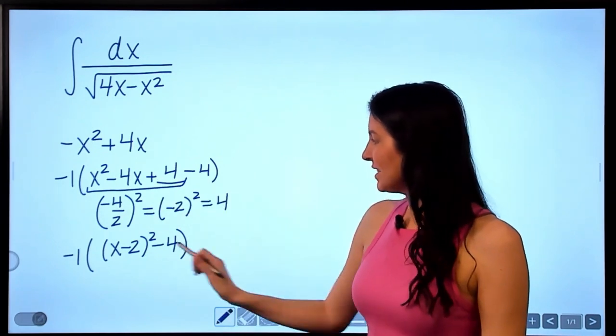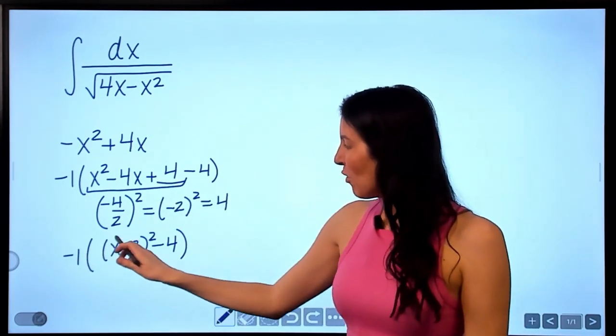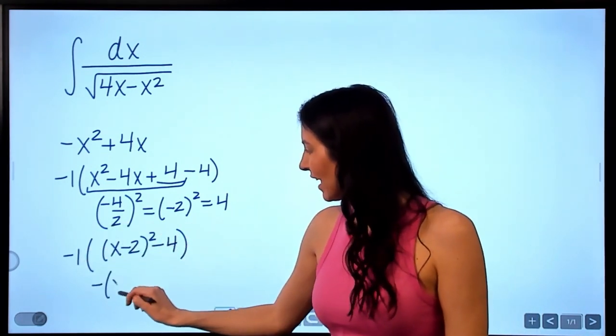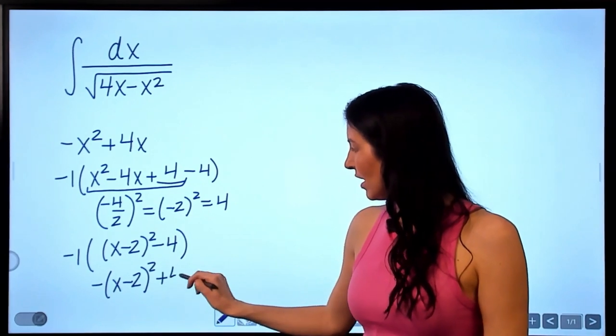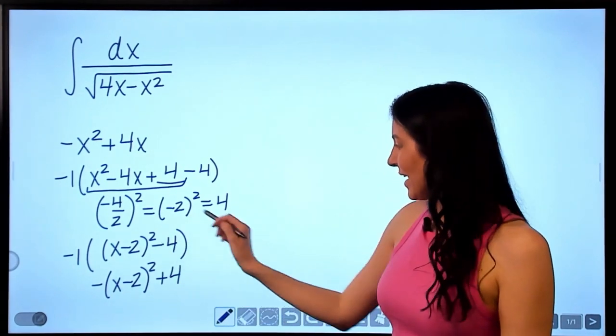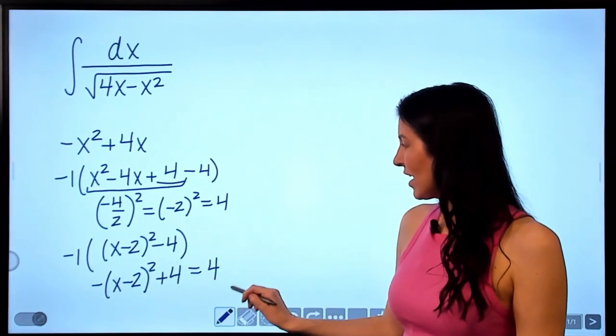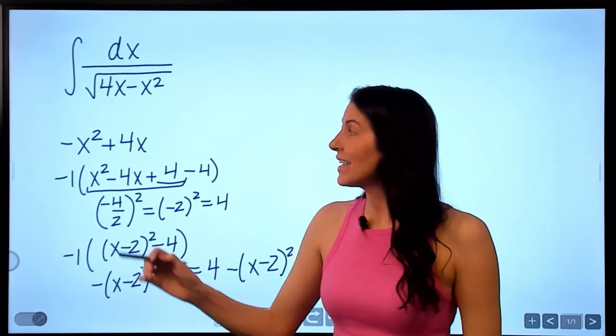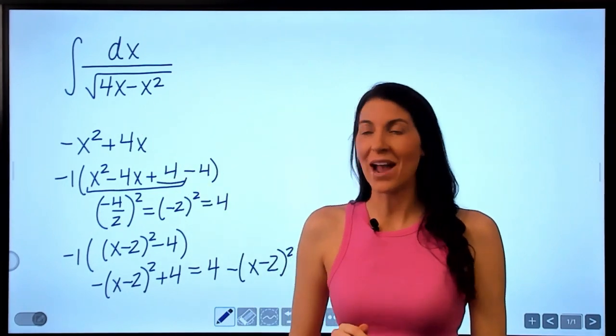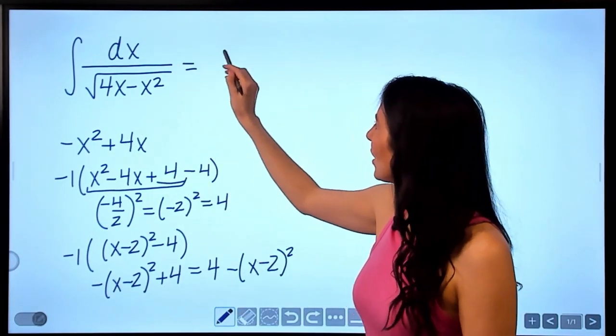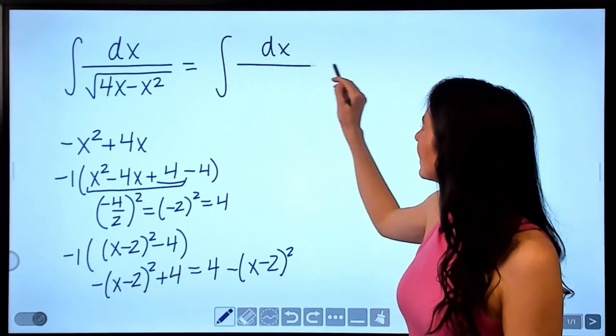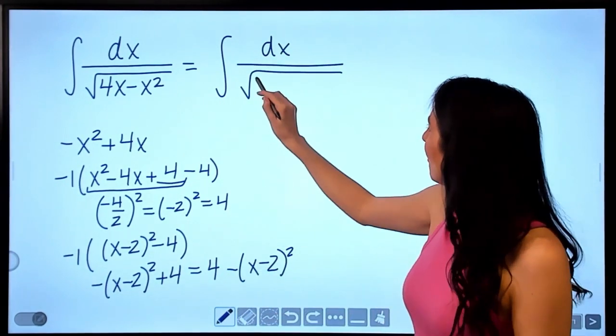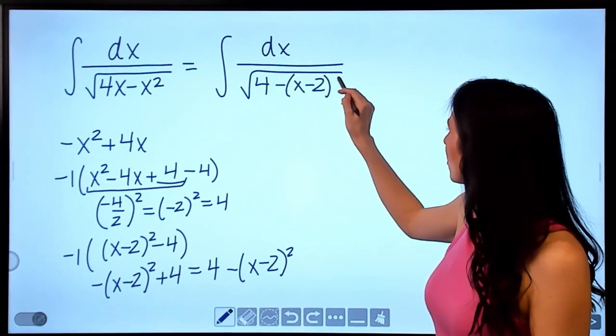And then I have this minus 4 right there. So now if I go back in and distribute the negative to each term, I would have negative x minus 2 squared plus 4. Or I can swap around those terms and write it as 4 minus x minus 2 squared. And that's how I can rewrite what is underneath the radical here. So let's come back up here and rewrite this integral as dx divided by the square root of what we got down here, 4 minus x minus 2 squared.